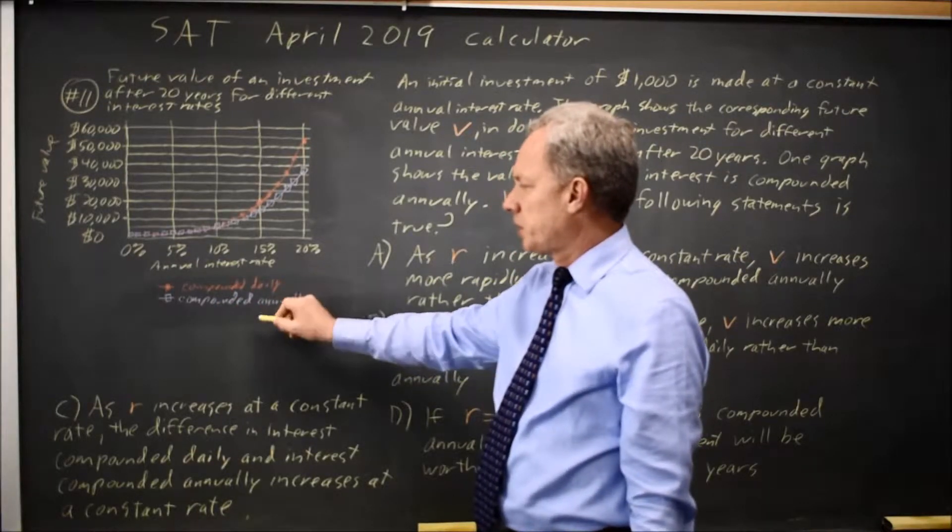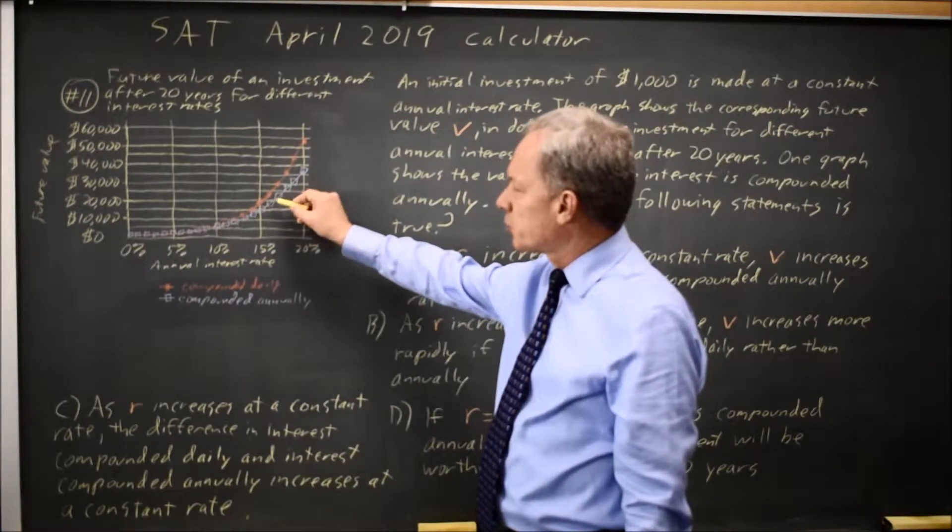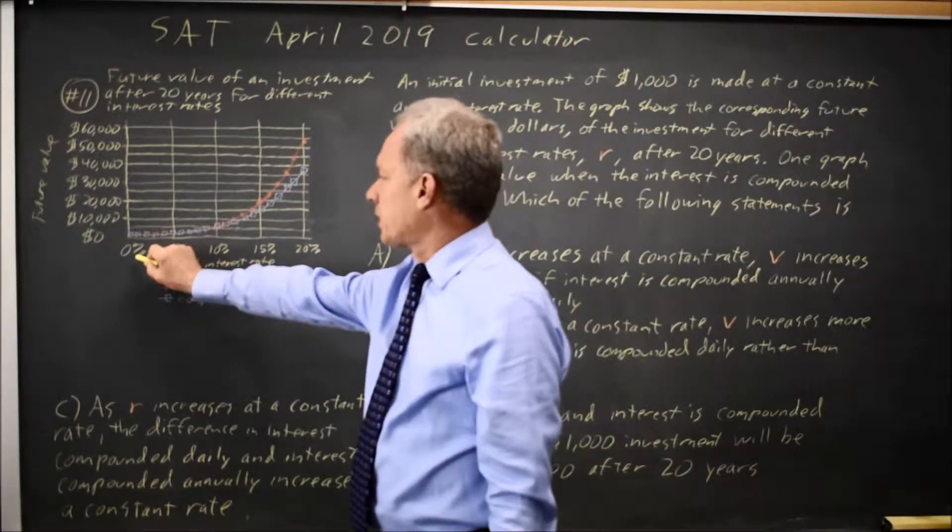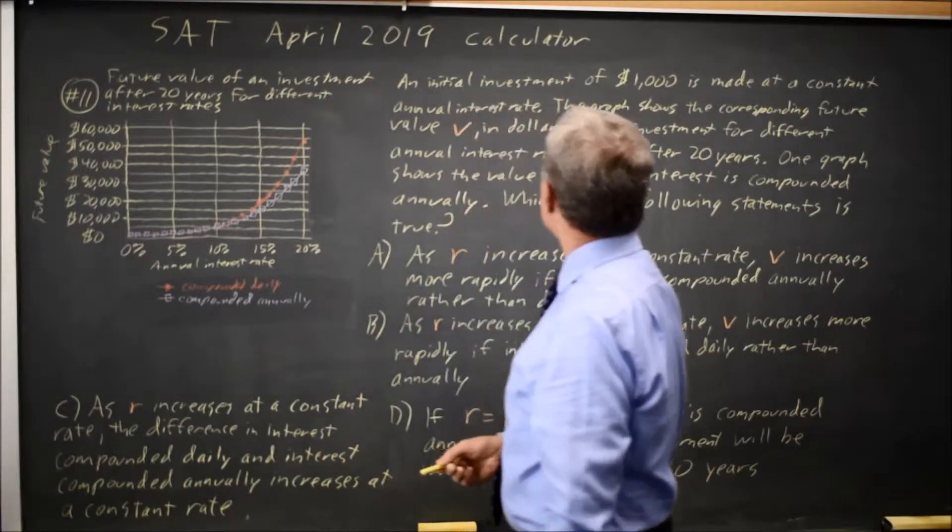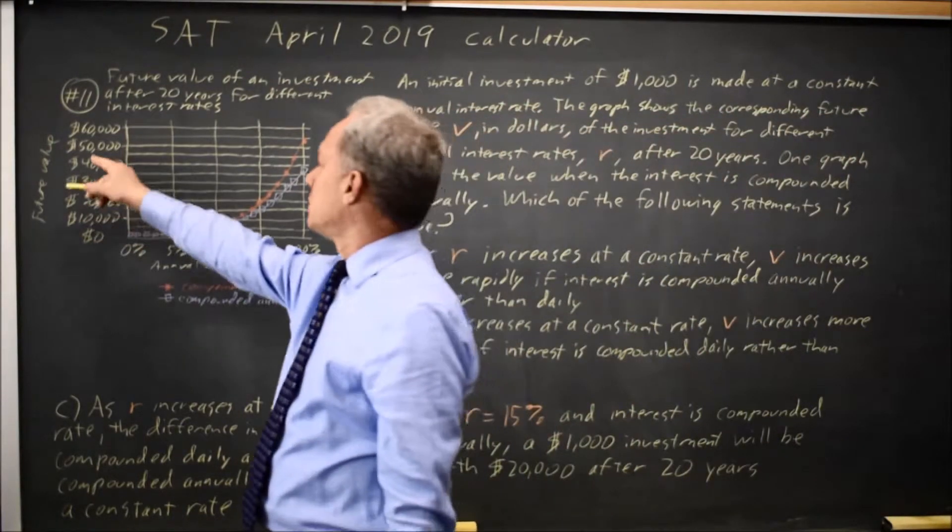I've drawn daily in pink and annual in purple because I don't have the precision of printing that they have for their outputs. The annual rates are 0, 5, 10, 15, or 20, where annual interest rate is R and the future value on the vertical axis is V.